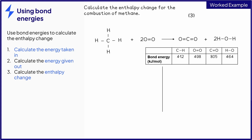First, identify the bonds present in the reactants. In this case, you have a carbon-hydrogen bond and an oxygen-oxygen double bond. Then identify how many of each bond you have and multiply that number by the bond energy in the table. This is the step that most students do incorrectly, so it can be helpful to cross out the bonds as you count them. There are four carbon-hydrogen bonds, which we can cross off here, and we multiply that by the bond energy, 412, to achieve 1,648.